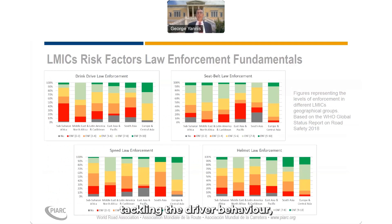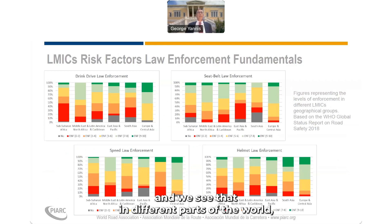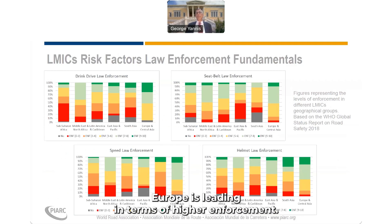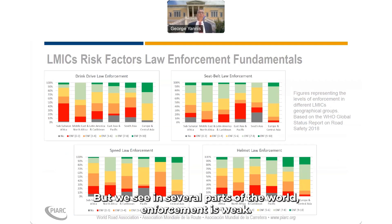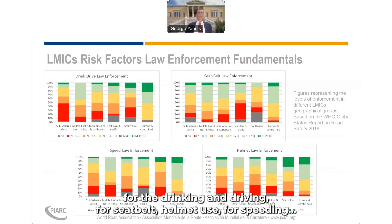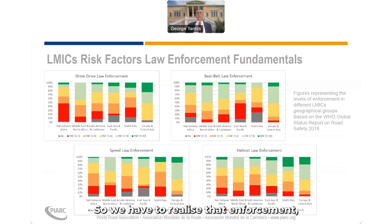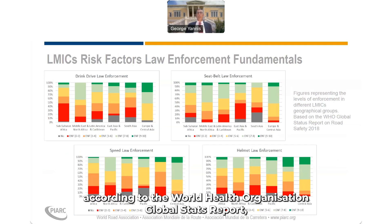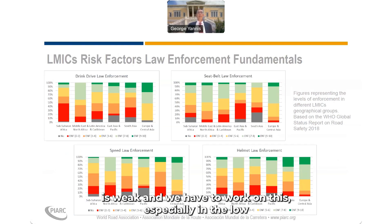Concerning tackling driver behavior, enforcement is the key measure. We see that in different parts of the world there is too much red and sometimes too little green. Europe is leading in terms of higher enforcement, and that is resulting in higher road safety performance. But in several parts of the world, enforcement is weak. We see a pattern for most key risk factors — drinking and driving, seatbelt and helmet use, and speeding. According to the World Health Organization Global Status Report, enforcement is weak and we have to work on this, especially in low- and middle-income countries.